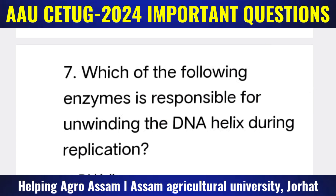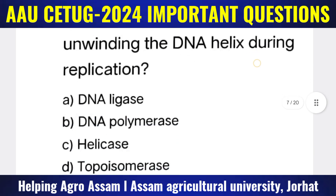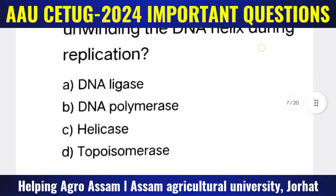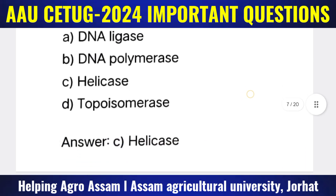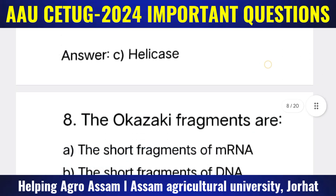Question 7: Which of the following enzymes is responsible for unwinding the DNA helix during replication? Options: (A) DNA ligase, (B) DNA polymerase, (C) Helicase, (D) Topoisomerase. The correct answer is option C — Helicase.